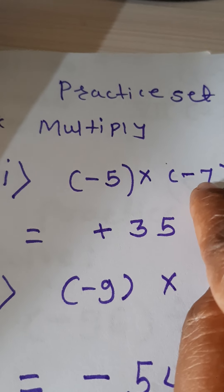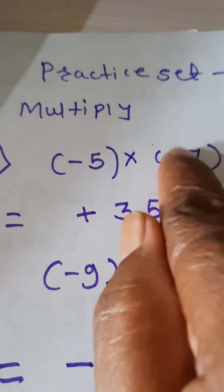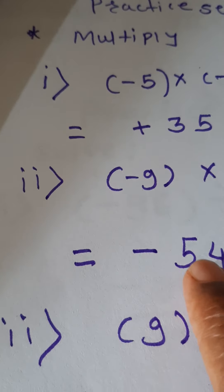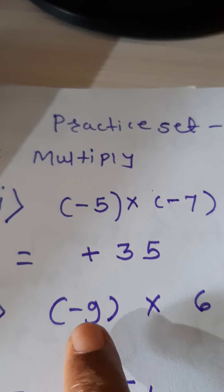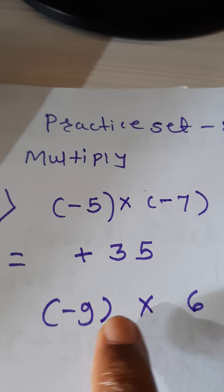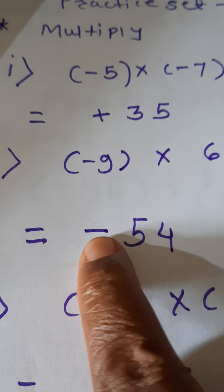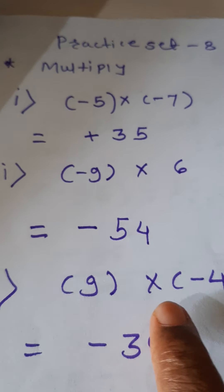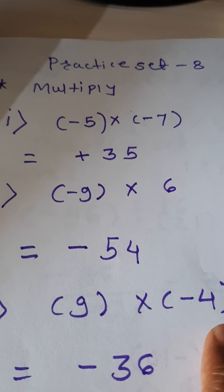Now see Practice Set 8 — multiply. First problem: negative 5 multiplied by negative 7. Negative into negative is positive — 5 × 7 = 35, so the answer is positive 35. Second example: negative 9 into 6. Here one number is positive and one is negative, so the answer is negative. Positive into negative is negative — 9 × 6 = 54 and as one number is negative, the answer is negative 54.